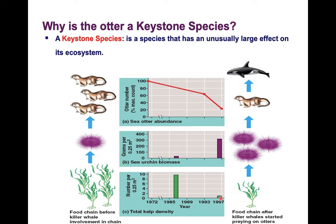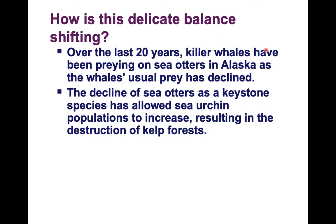Kelp is actually an algae, not a plant, to be more specific. The kelp population is decreasing. Over the last 20 years, killer whales have been preying on sea otters in Alaska as the whale's usual prey has declined. The decline of sea otters as a keystone species has allowed sea urchin populations to increase, resulting in the destruction of kelp forests.